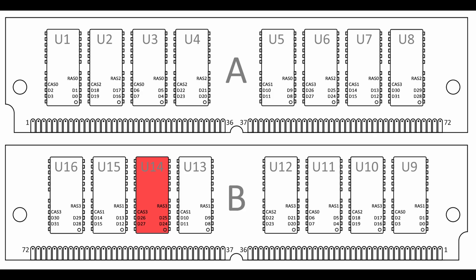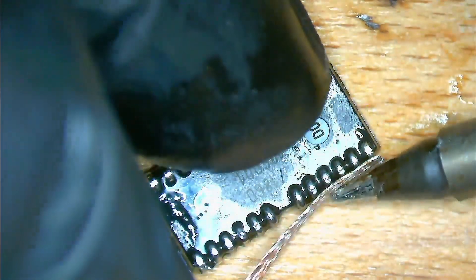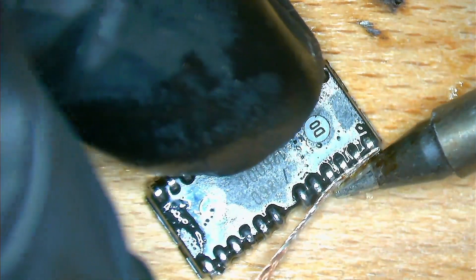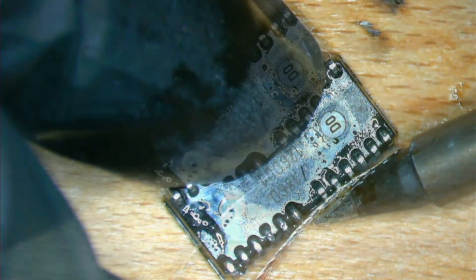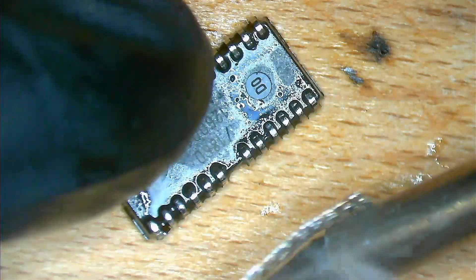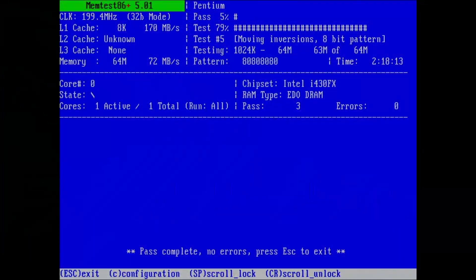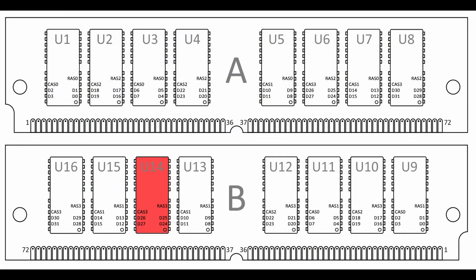Since U14 was more likely to be the faulty chip in my selection, I will replace this chip first. We are down to two chips — a 50% chance in the fourth round of replacing chips and running memtest86 plus. After this test, we know for sure which chip is faulty. After several passes and hours of testing the module, no errors were detected. U14 is the faulty chip. We finally found it.